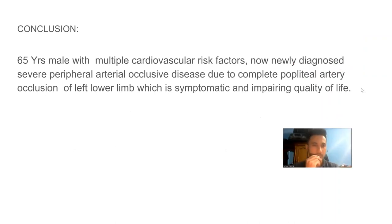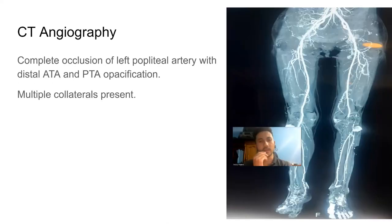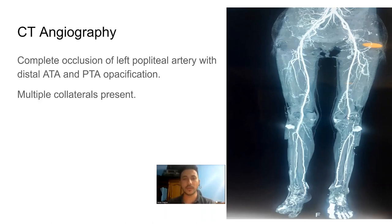Assessment: 65-year-old female with multiple cardiovascular risk factors, newly diagnosed with severe peripheral artery occlusive disease due to complete popliteal artery occlusion of the left lower limb, symptomatic and impairing quality of life. CT angiography was ordered to determine whether she is a surgical bypass or endovascular candidate. CT shows complete occlusion of the left popliteal artery with distal anterior tibial artery and posterior tibial artery opacification through multiple collaterals. No contrast filling in the popliteal artery, with multiple collaterals noted.